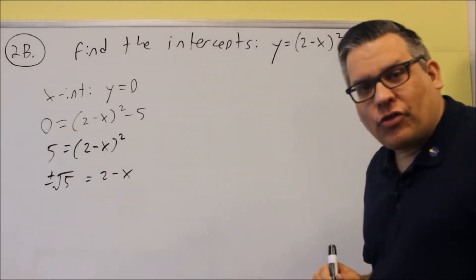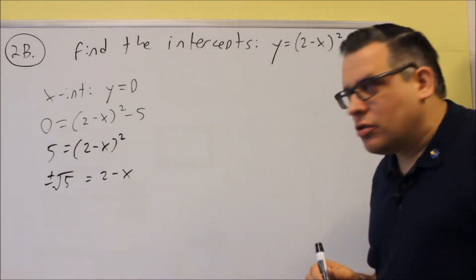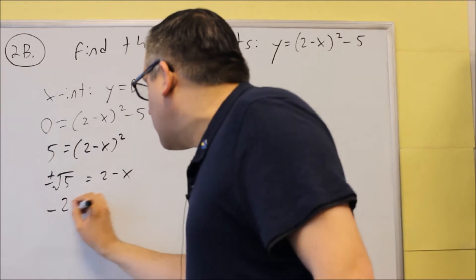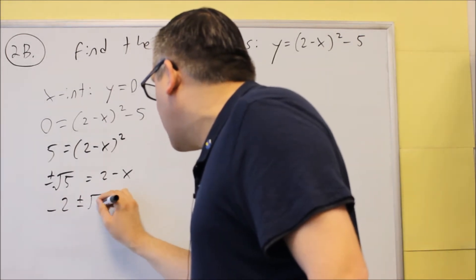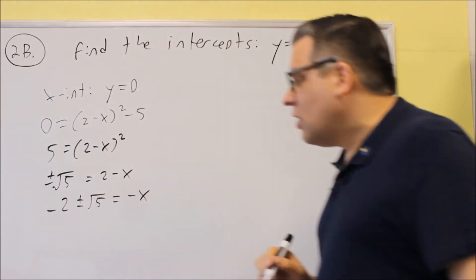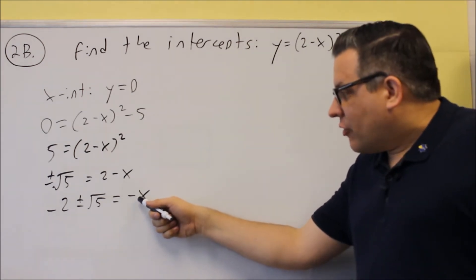We need to solve for x, so I'm going to subtract the 2 over to the other side. So I get negative 2 plus or minus square root of 5 equals negative x. Now remember, there's a negative that's still there, so be careful. We've got to clear out that negative.